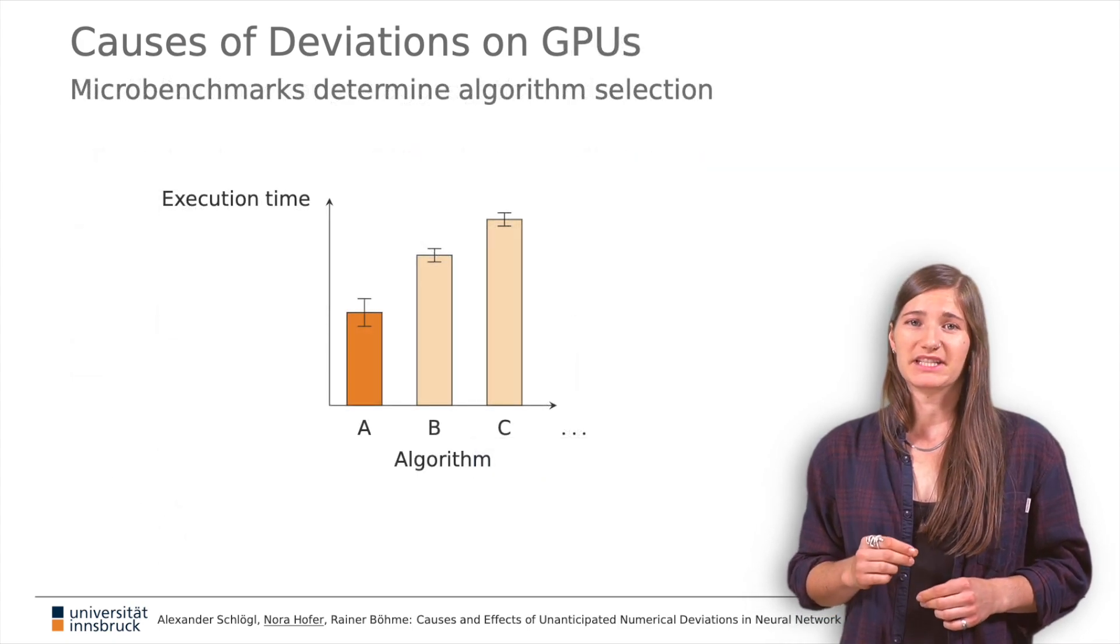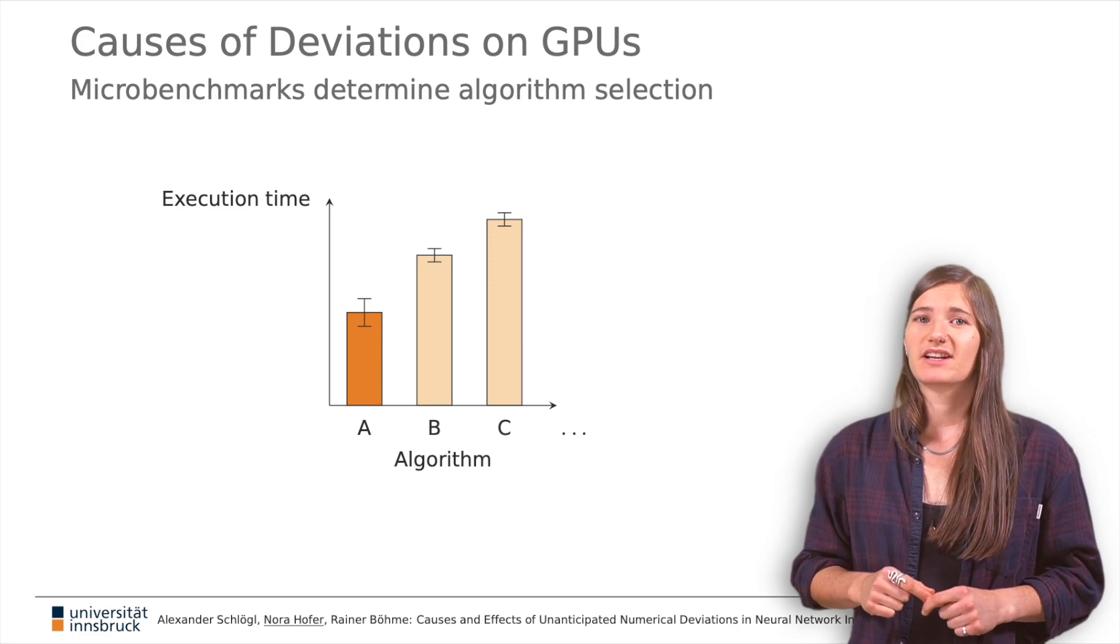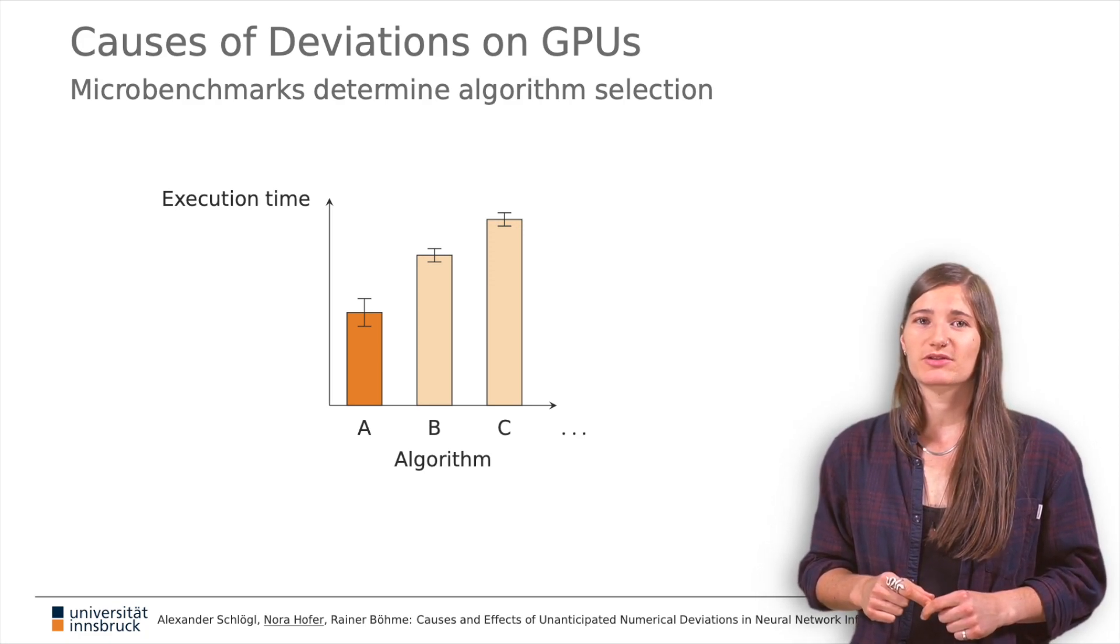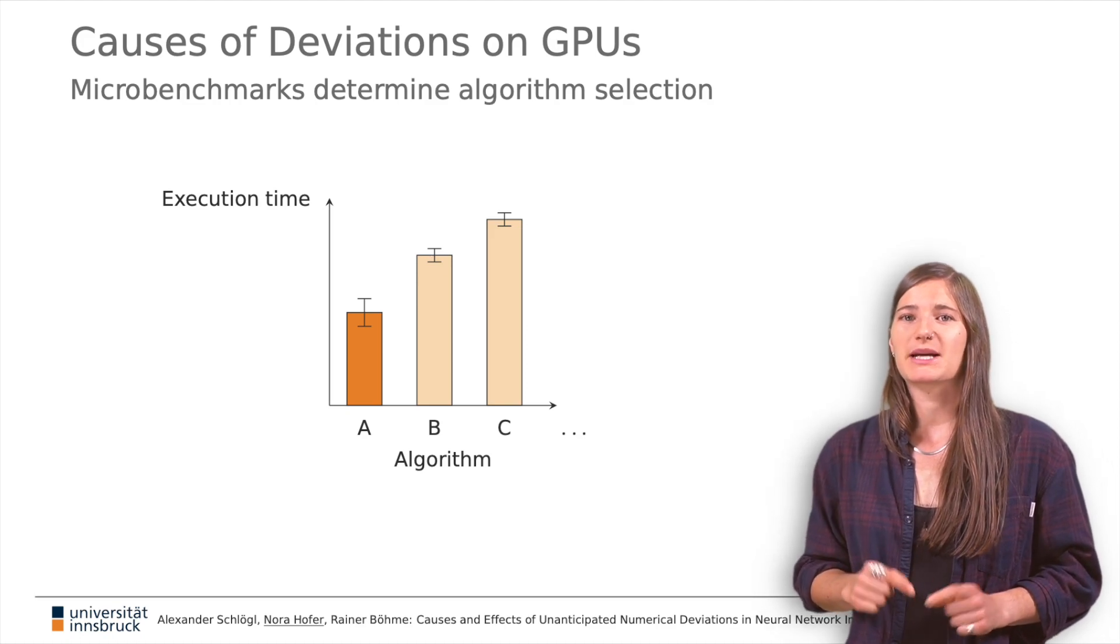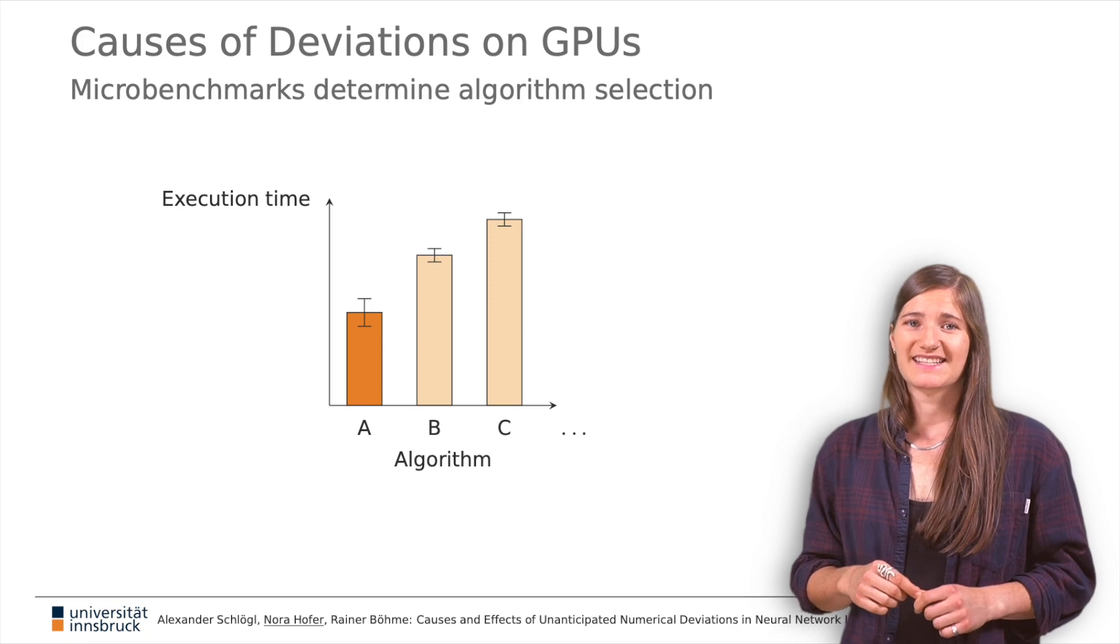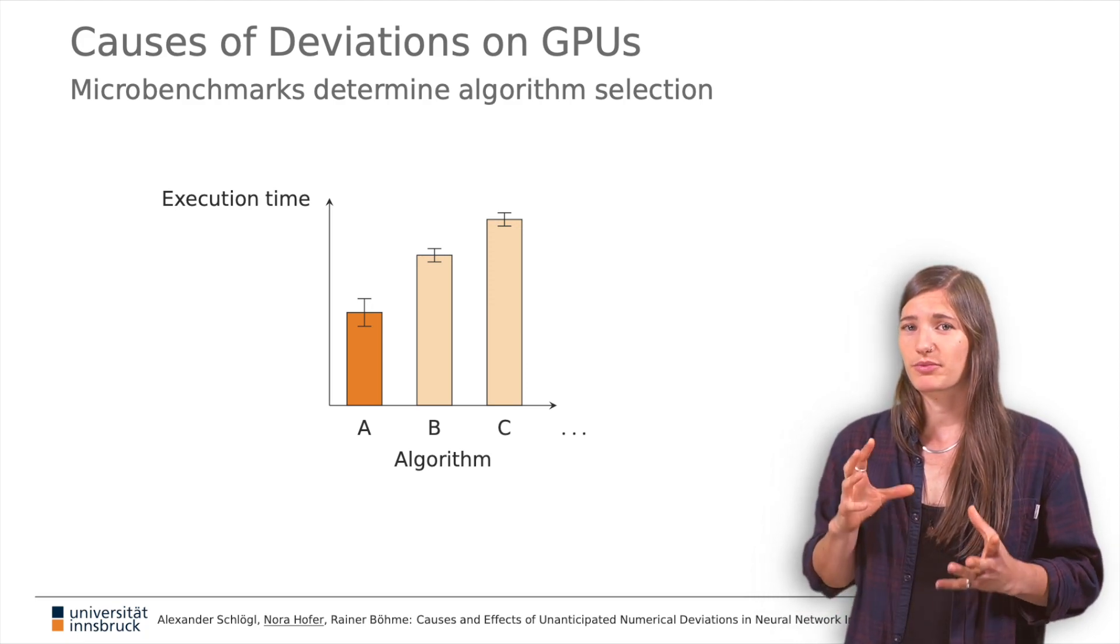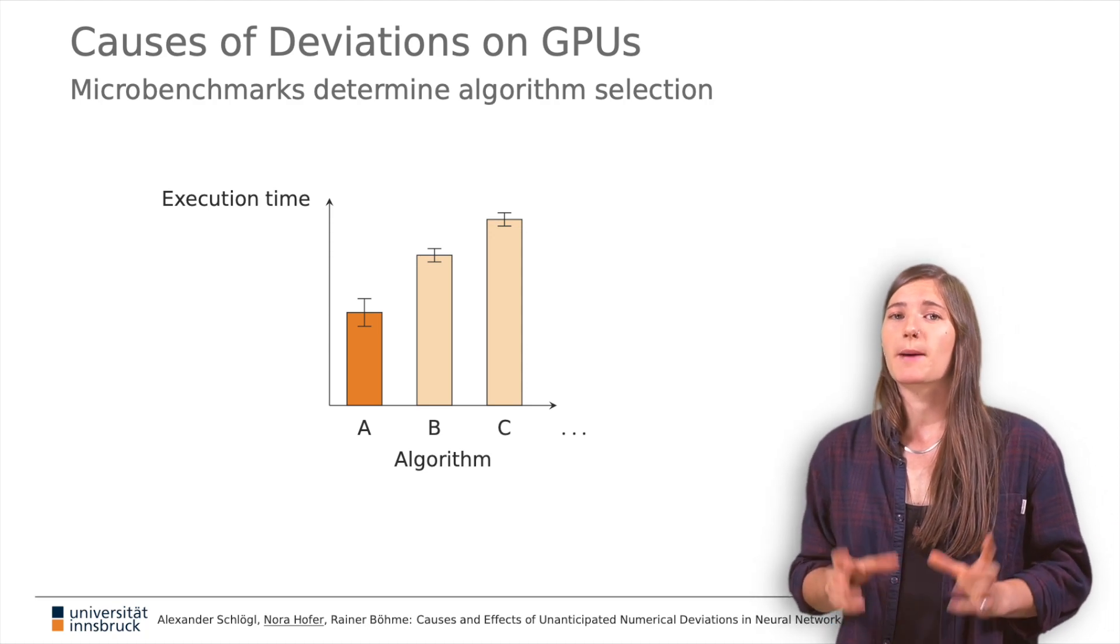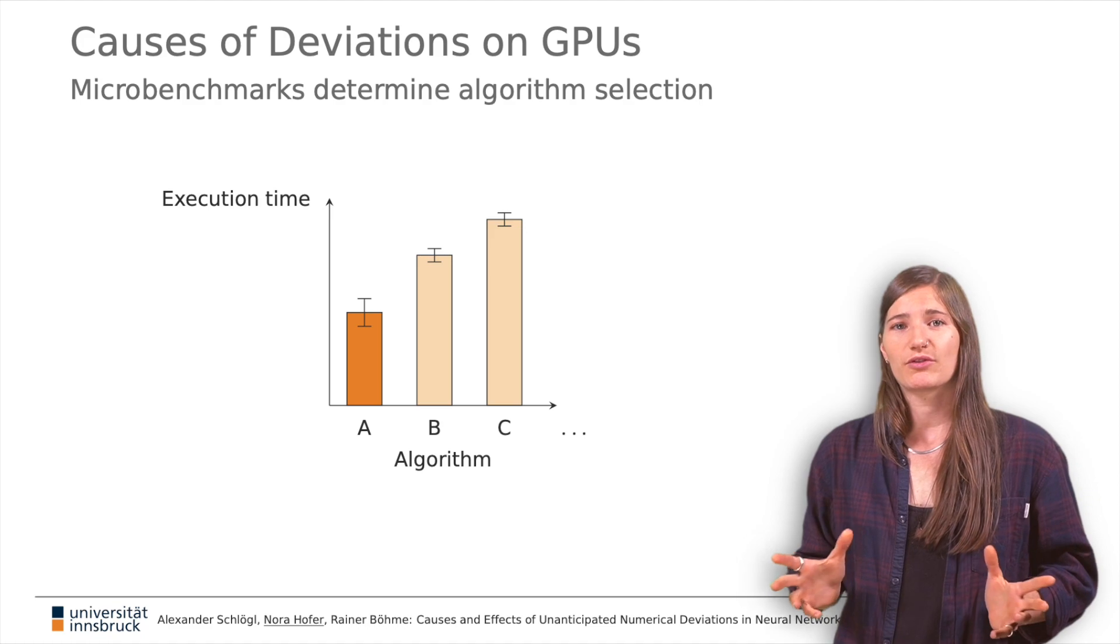The indeterministic behavior of GPUs has a distinct cause. Typical machine learning frameworks access GPUs through accelerator libraries. These libraries implement many different variants of convolution algorithms. Since it's not known beforehand which algorithm is fastest for a given problem dimension, GPUs run microbenchmarks to select the fastest algorithm at runtime for every convolution layer.